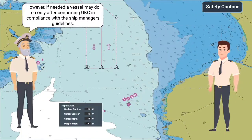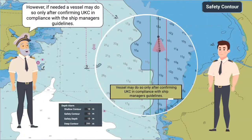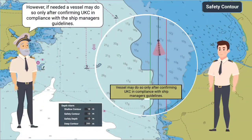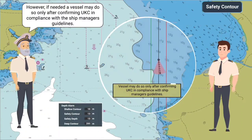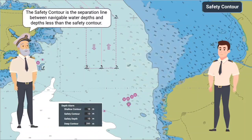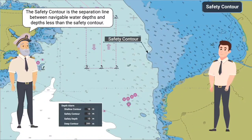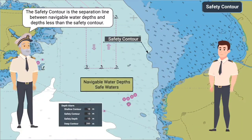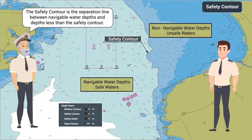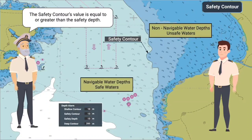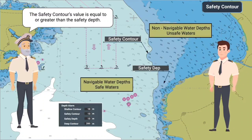However, if needed, a vessel may do so only after confirming UKC in compliance with the ship manager's guidelines. The safety contour is the separation line between navigable water depths and depths less than the safety contour. The safety contour's value is equal to or greater than...